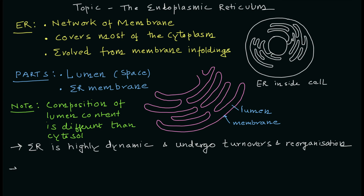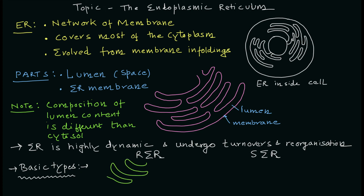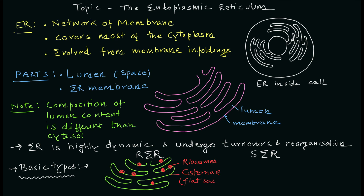There are two basic types of endoplasmic reticulum: smooth endoplasmic reticulum and rough endoplasmic reticulum, represented as SER and RER. The major difference is the presence of ribosomes — these red dots are the ribosomes, and they are present only in the rough endoplasmic reticulum.